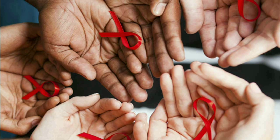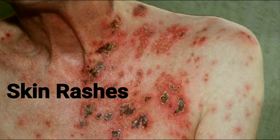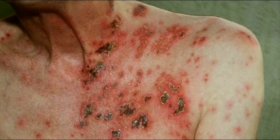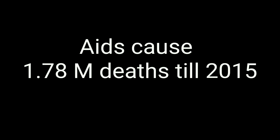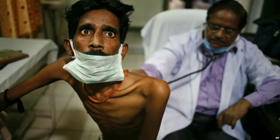At number 5: AIDS. AIDS is caused by the HIV virus. It causes skin rashes and slow death, and caused a total of 1.78 million deaths up to 2015. It is one of the most dangerous diseases, but it can be avoided by avoiding sex with unknown partners and using physical barriers.